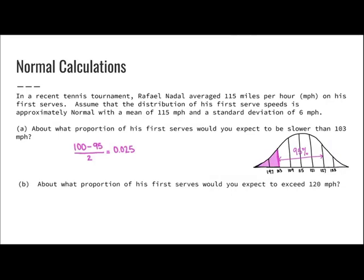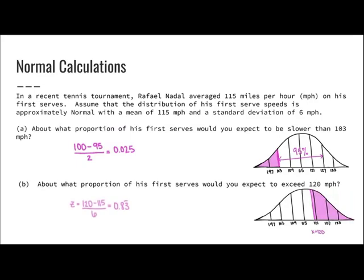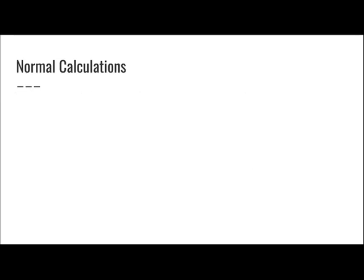About what proportion of his first serves would you expect to exceed 120 miles per hour? Since I'm shading to the right, I'll subtract from 1. I find the Z-score, then look up 0.83 in the Z-table, getting 0.7967. Subtracting from 1 gives 0.2033.